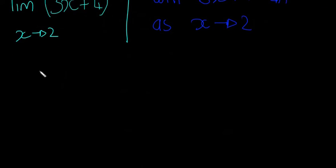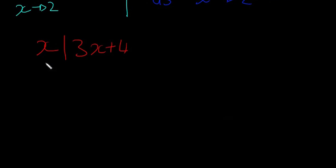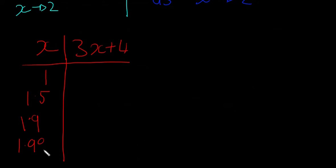We'll do this with a table, and this is the way most books would show it as well. 3x plus 4. We'll say x is equal to 1, 1.5, 1.9, and then 1.999. Each time, x is going to get closer and closer to 2, but it never actually reaches 2.